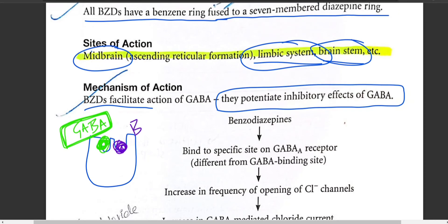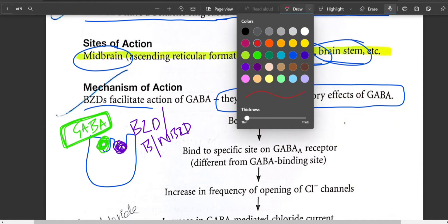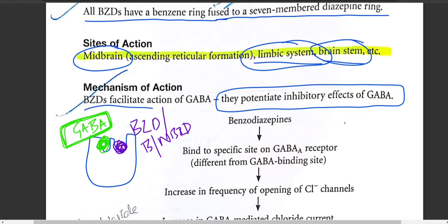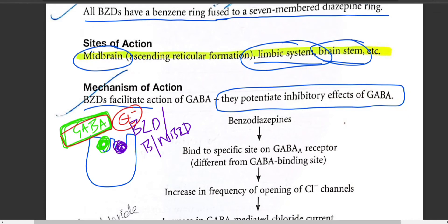On one side of the receptor we have GABA, and on the other side we have benzodiazepines — this also applies to barbiturates and non-benzodiazepine groups. In the absence of benzodiazepines, only GABA is present. Under these conditions, chloride ions normally move from the extracellular to the intracellular space.